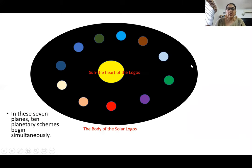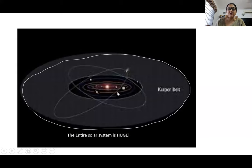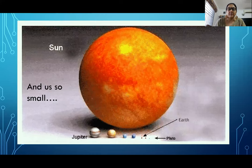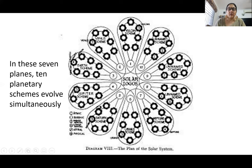Using these fundamental particles, the Solar Logos created the seven planes of being through his own body. In the solar system scheme, ten planetary schemes are being created. The sun is the heart of the Solar Logos and the entire solar system is his body — actually double the depth of what we know, because there is a Kuiper belt of matter floating around it. Comparatively, the sun is like our heart, much bigger than earth, which is just a tiny dot.